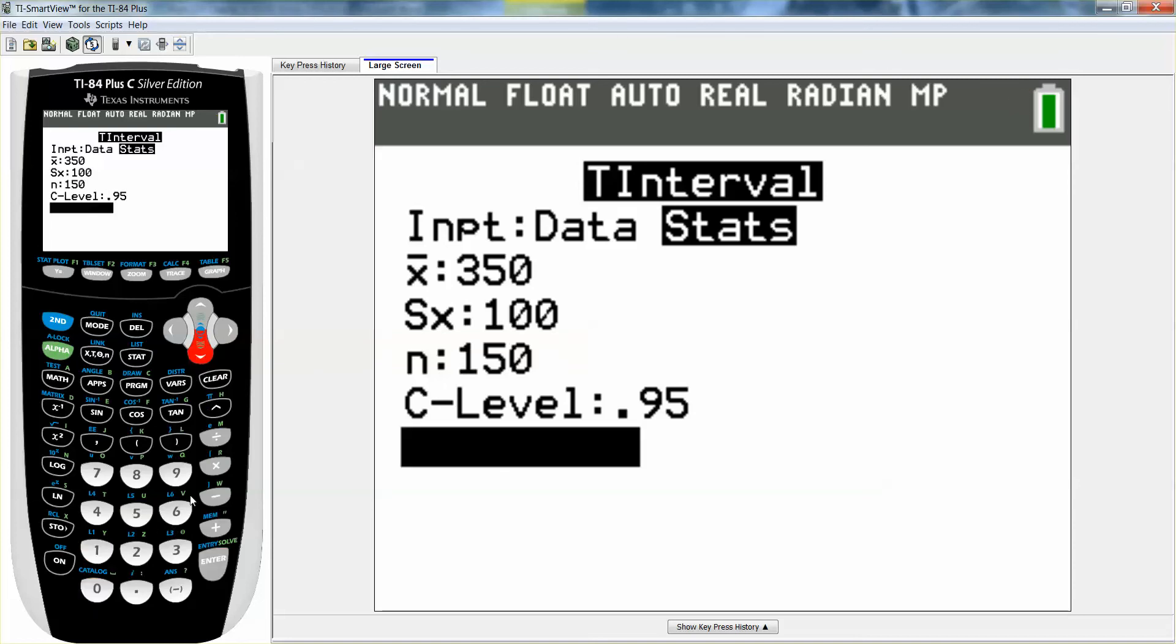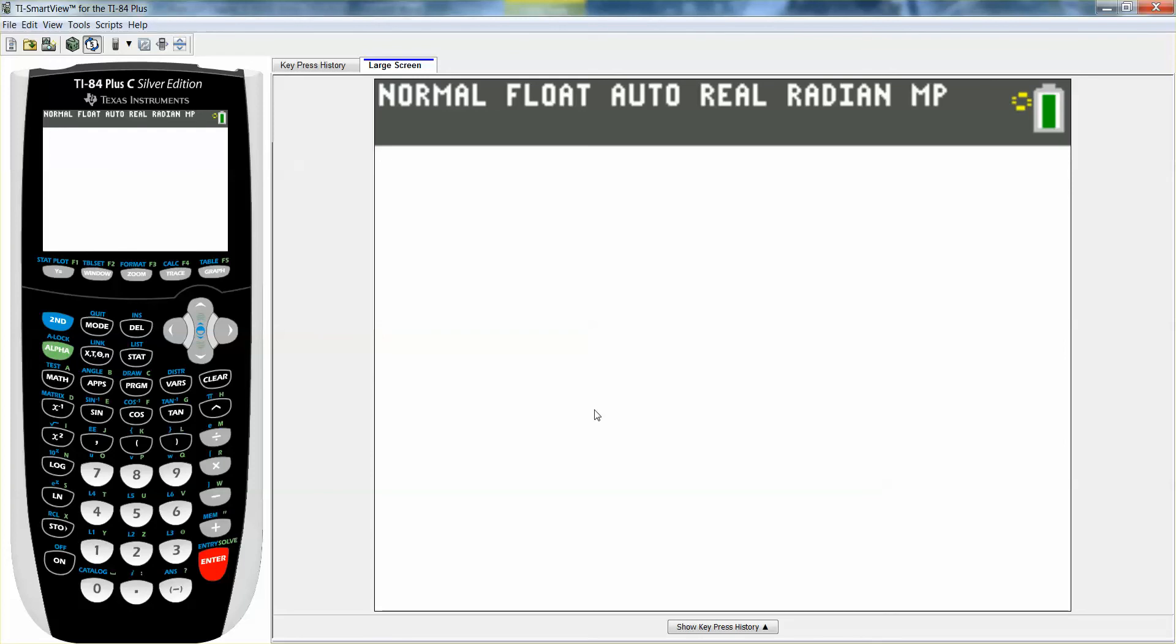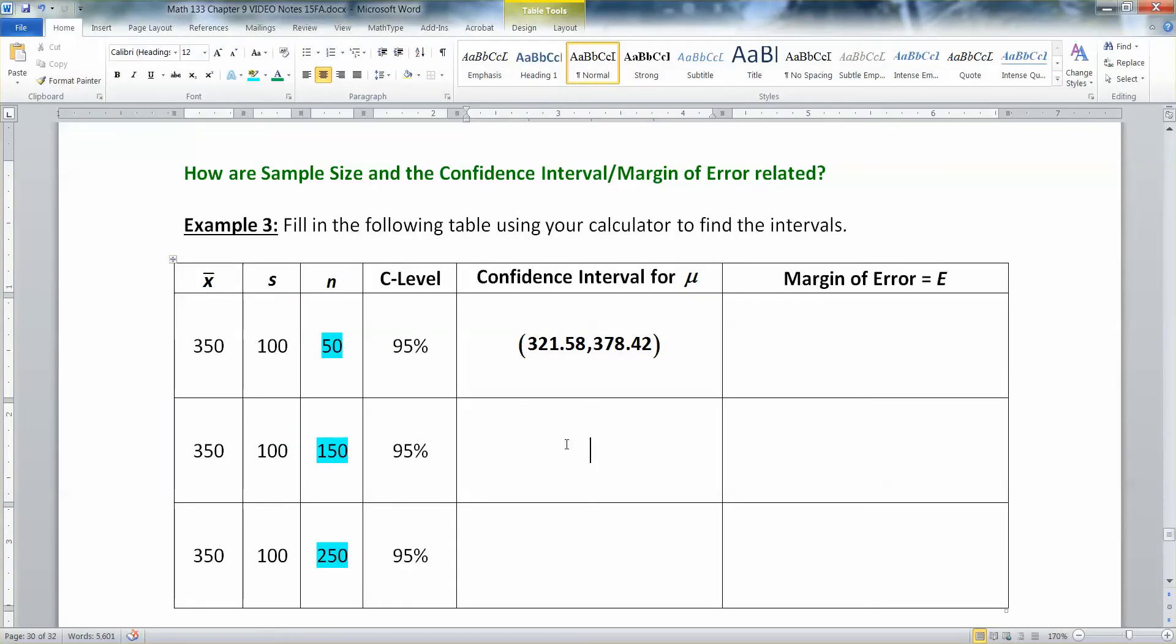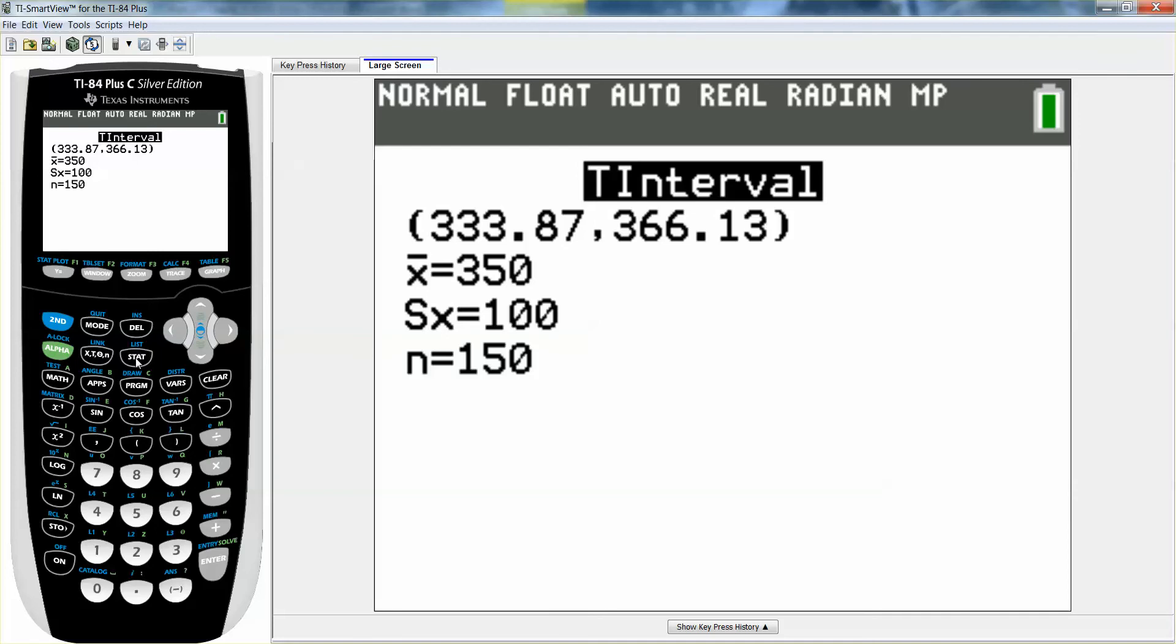So I'm going to do that and then go down to calculate enter. And I get 333.87 and 366.13. So I'm going to put that one in right here. And now I've got to do it again one last time.